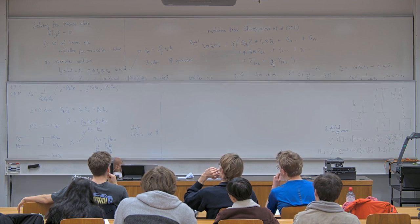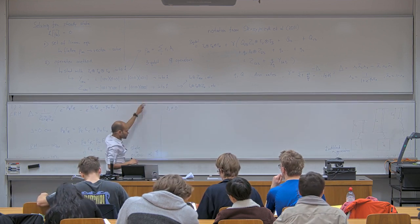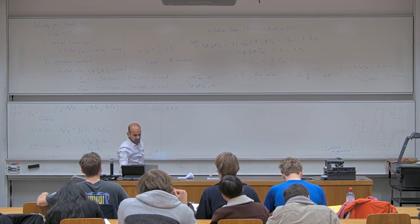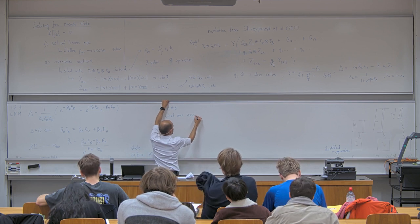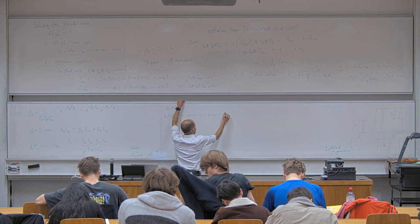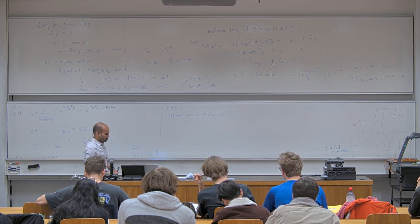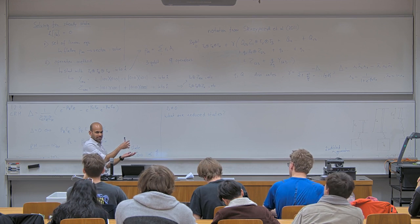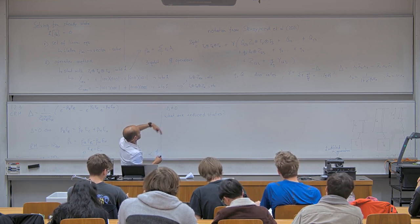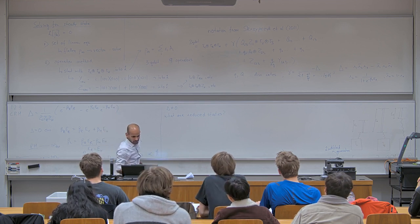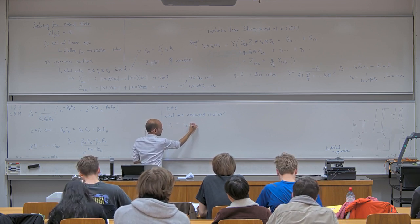Now let's look at what happens when Δ ≠ 0. The steady state is no longer the thermal state. One of the most important things to look at is the reduced states. The whole point is to construct a fridge, so we want the cold qubit to be cooled to a temperature colder than its bath. Taking the trace over the other qubits, ρ_x = τ_x + (q_x Γ/π) · Z_x, where π_x is the dissipation rate and q is related to Δ and other constants.